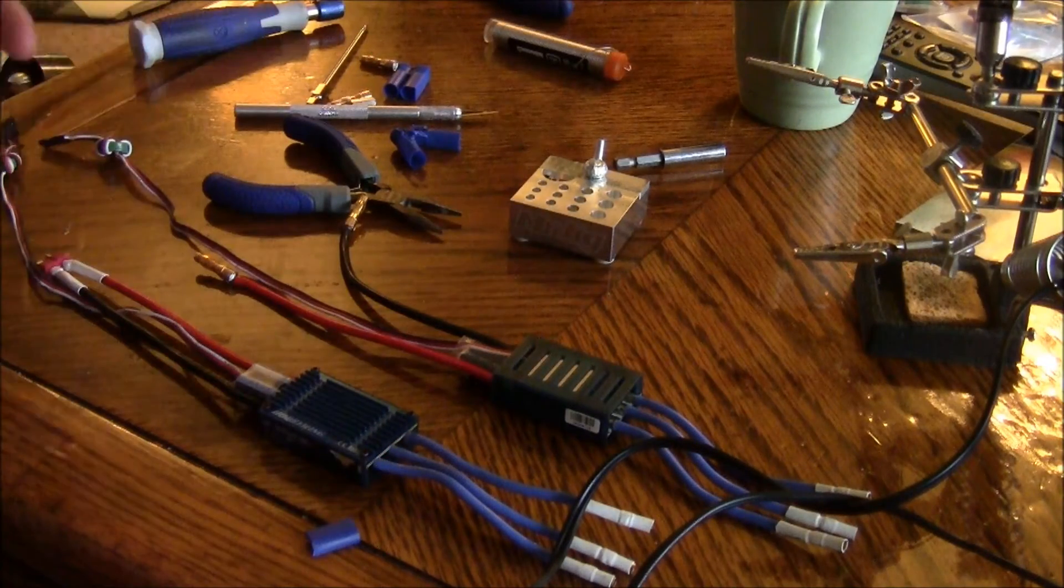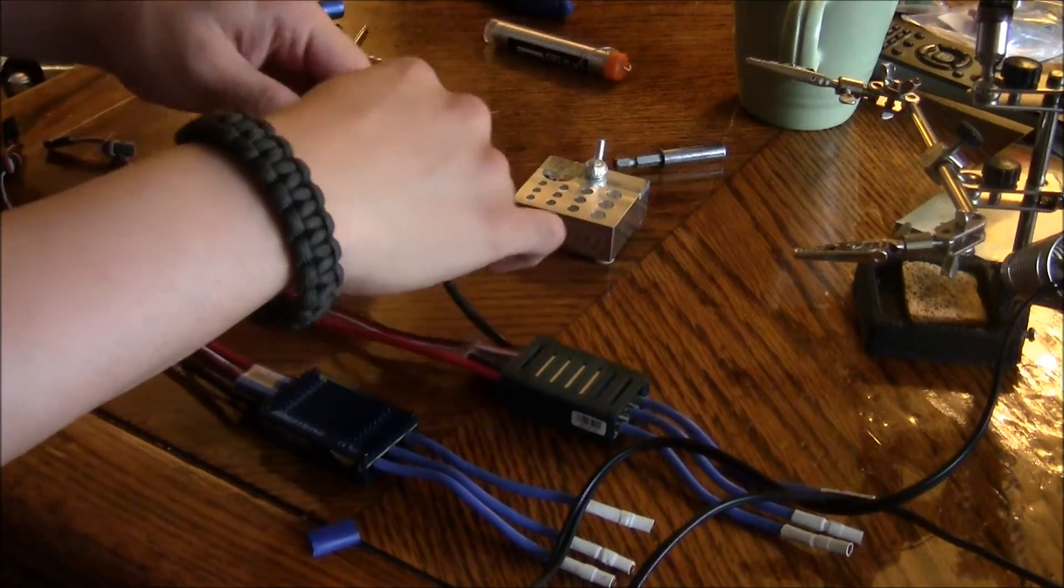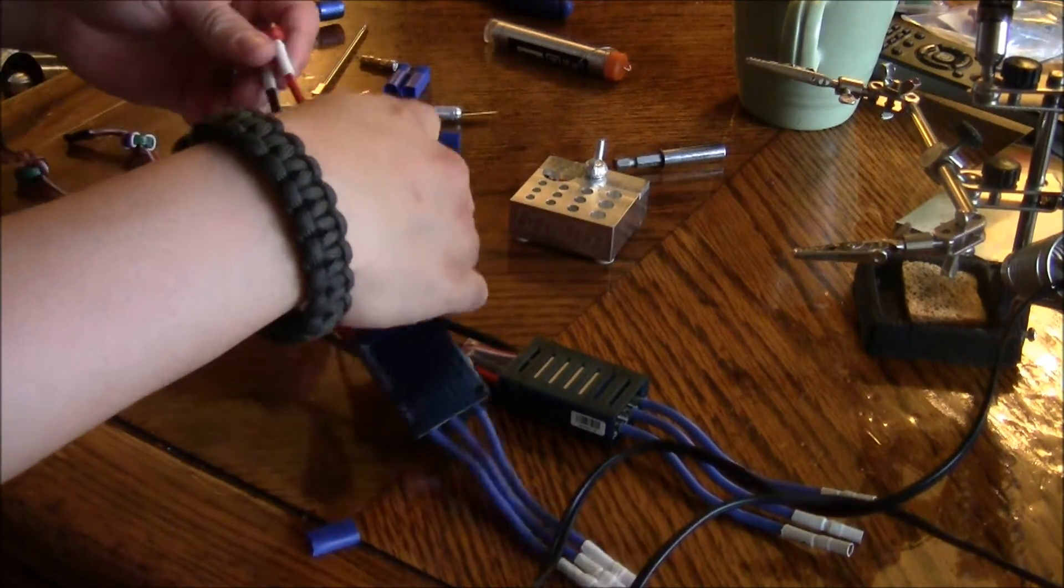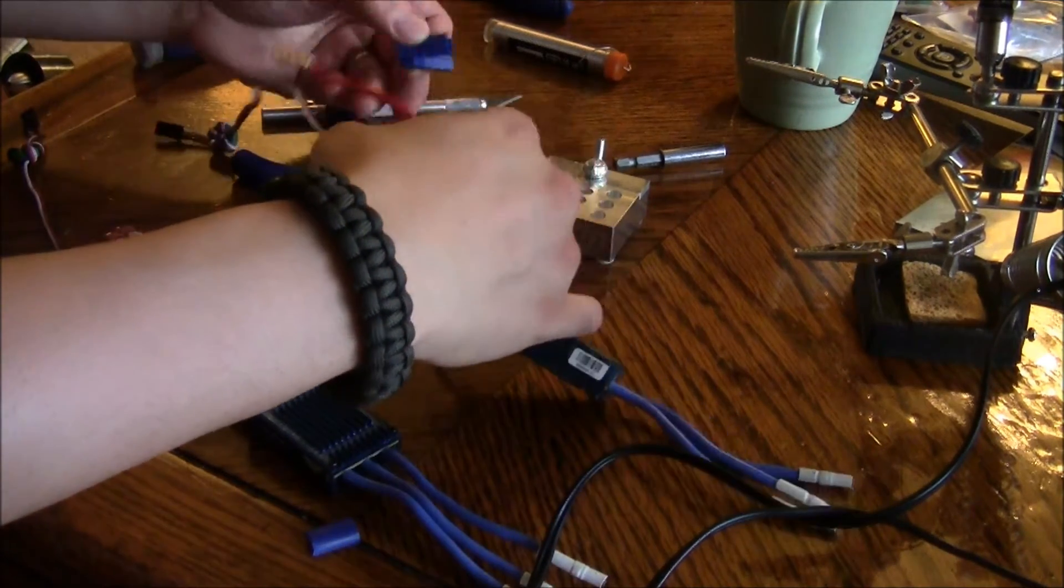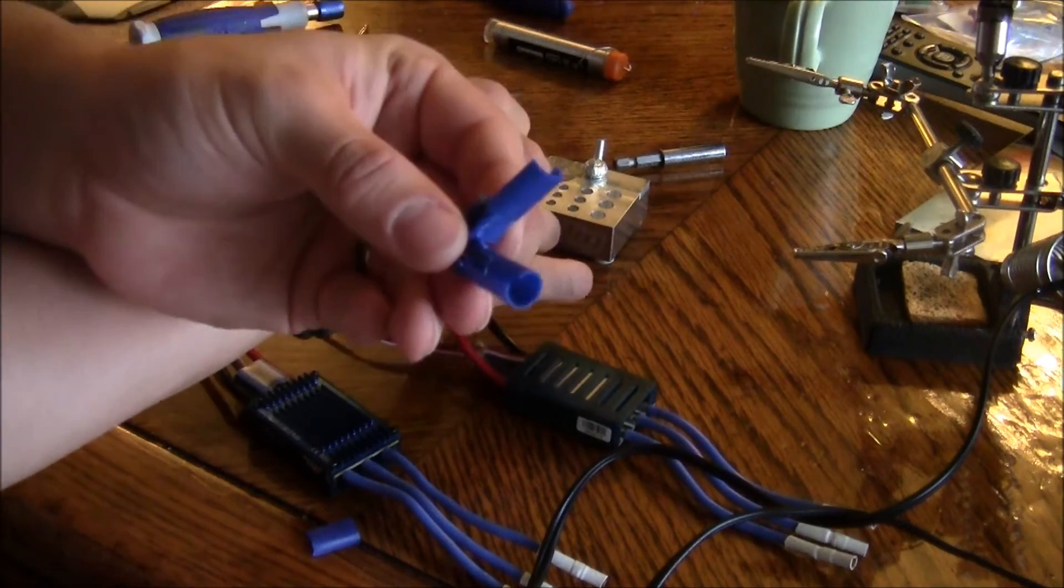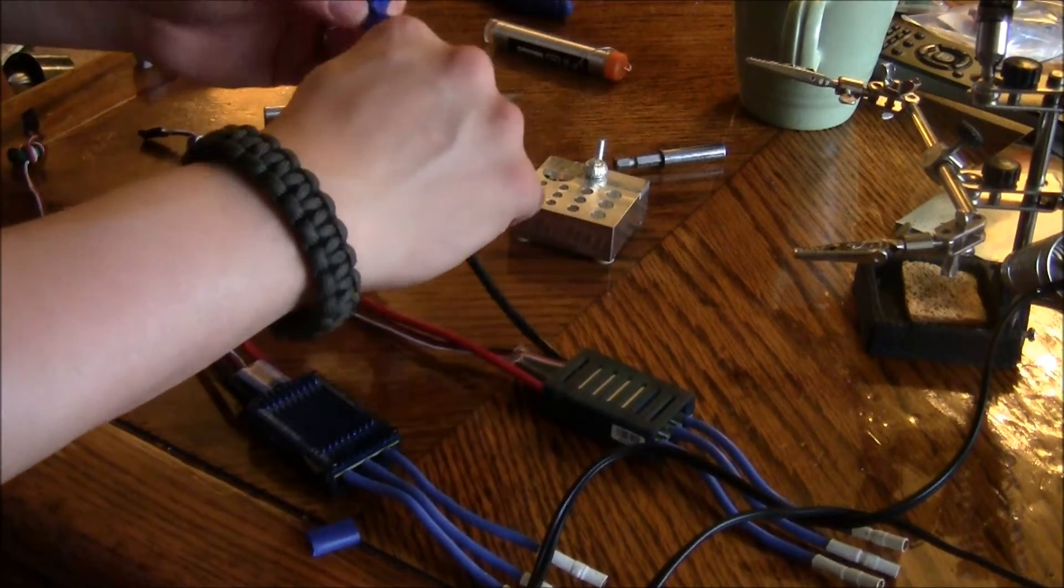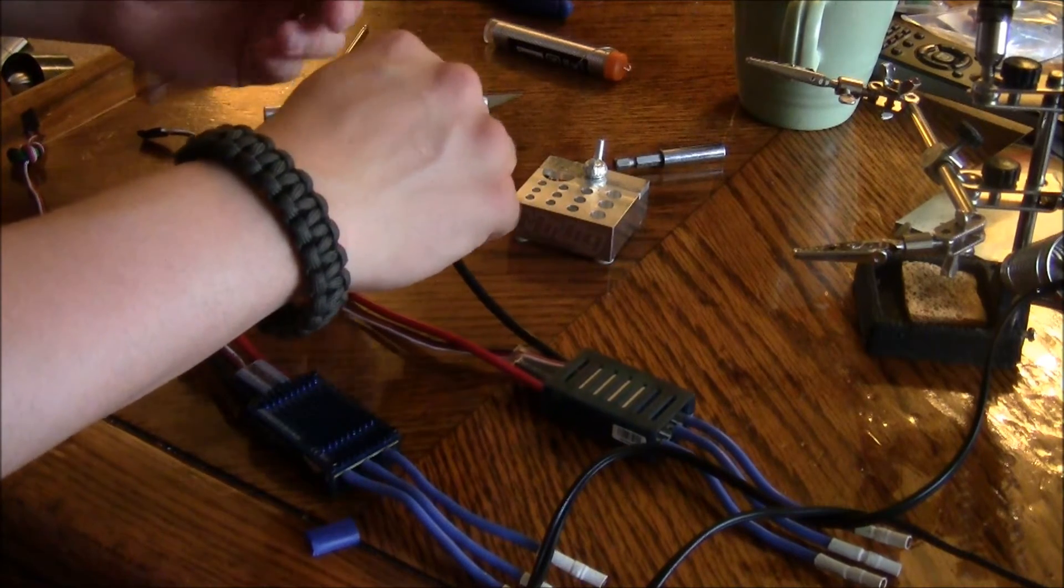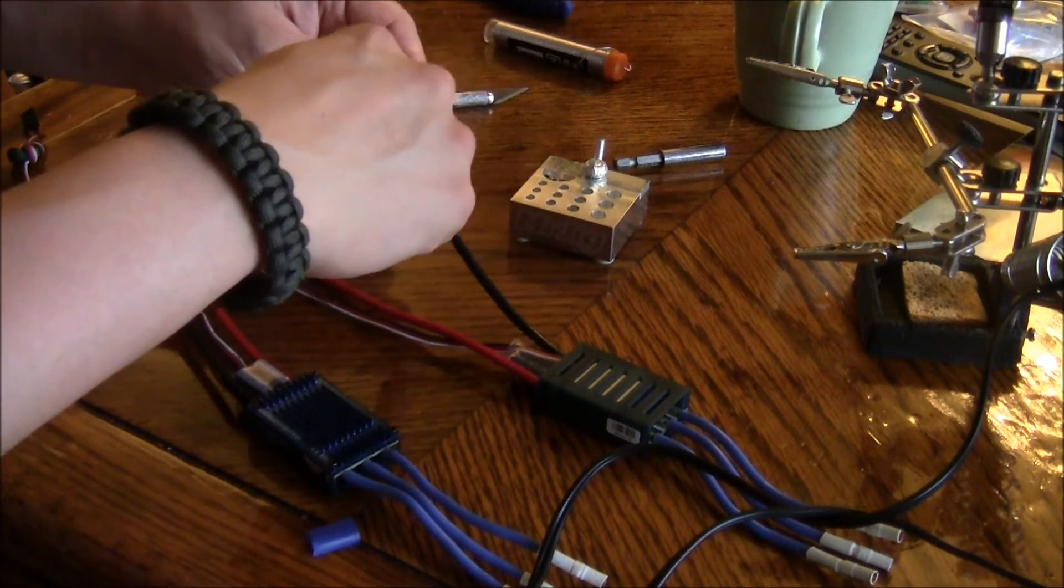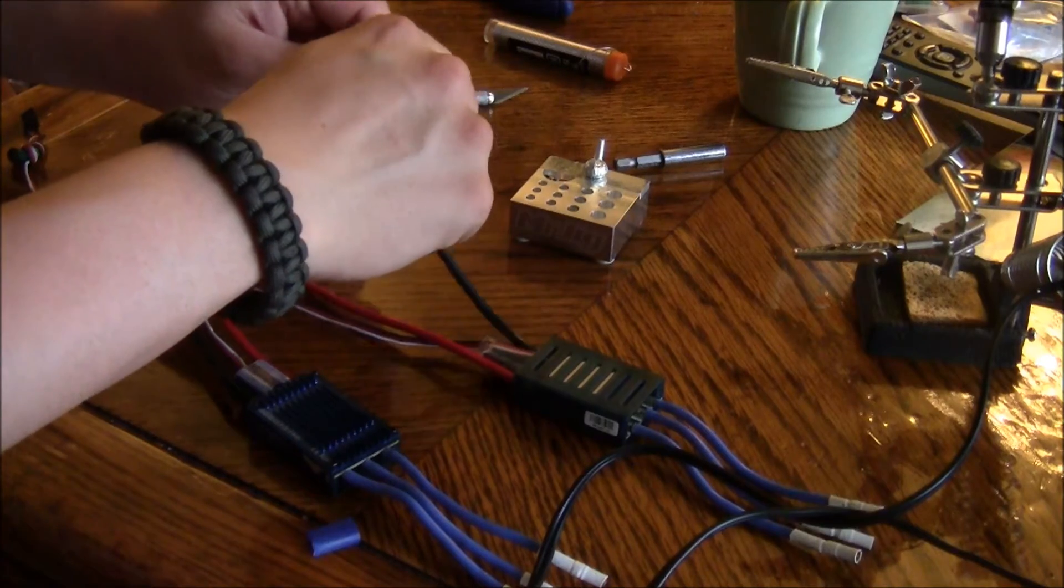Okay guys, we're going to be soldering these two ESCs together. I went ahead and separated the casing from this ESC. I was running an EC5 connector, so what I'm going to do is separate the solder joint from the ESC.